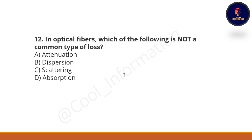Question 12: In optical fibers, which of the following is not a common type of loss? Option A: attenuation. Option B: dispersion. Option C: scattering. Option D: absorption. The correct option is B — dispersion is not a common type of loss.